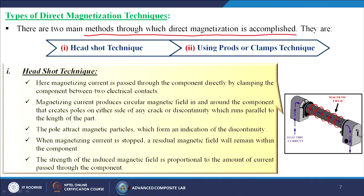There are two main direct magnetization techniques. The first is the headshot technique and the second uses prods or clamps. In the headshot technique, magnetizing current is passed through the component directly by clamping the component between two electrical contacts. As you can see in the image, the main workpiece is held between two contact points — one positive terminal and one negative terminal — and the magnetic field is created directly through the specimen. This is called the headshot technique.